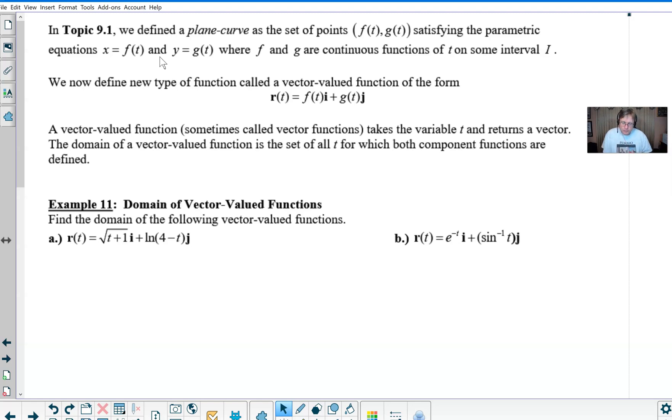We're now simply going to define a function called a vector-valued function. So basically, you can see that the things that come out in front of the i and the j are nothing more than functions of t. Now that's all there is to it, right?